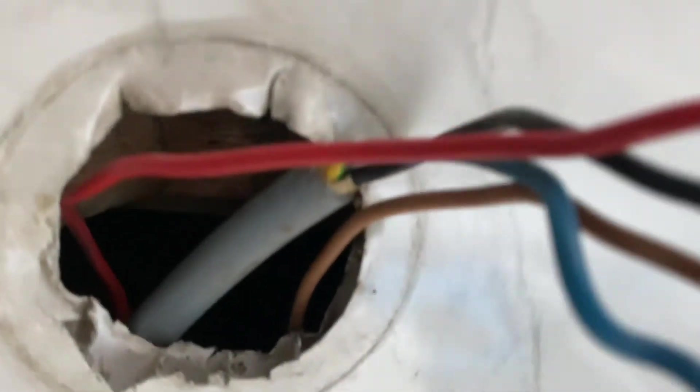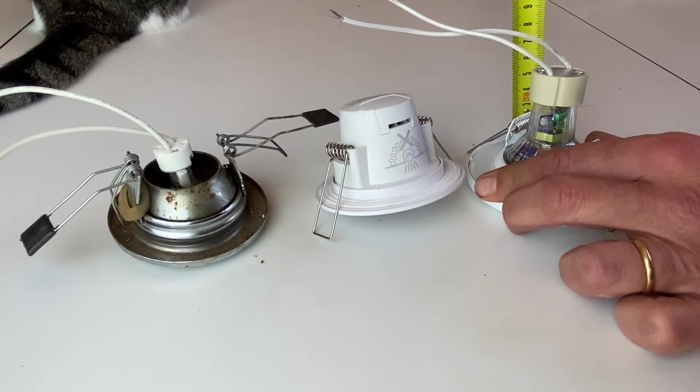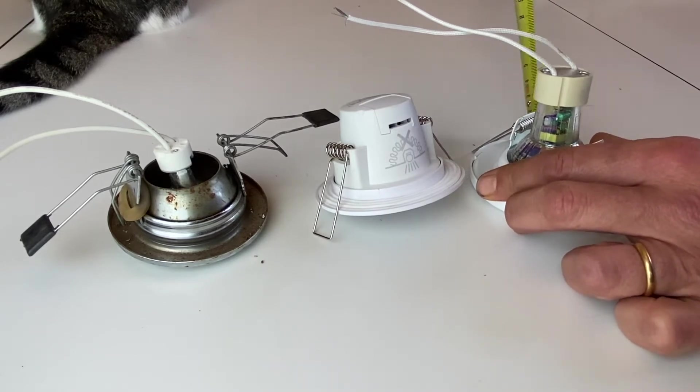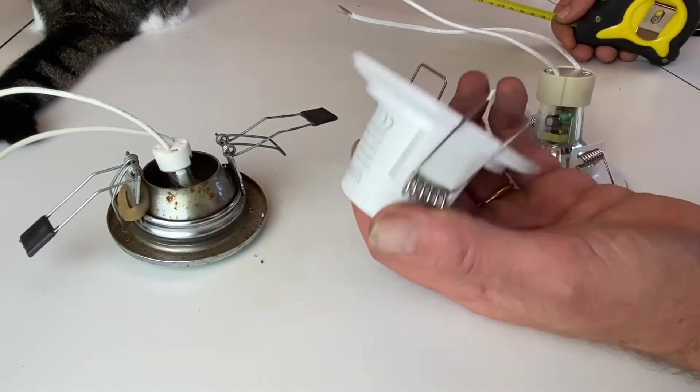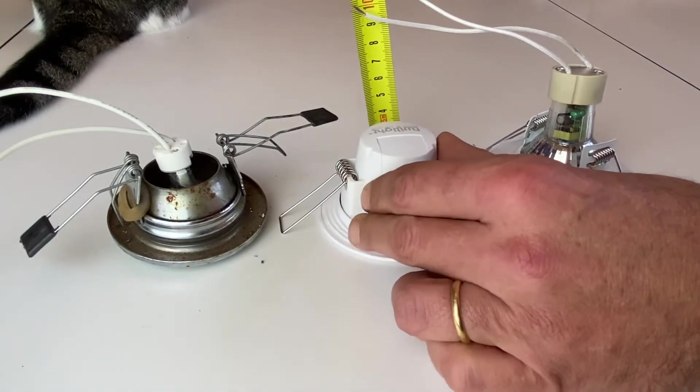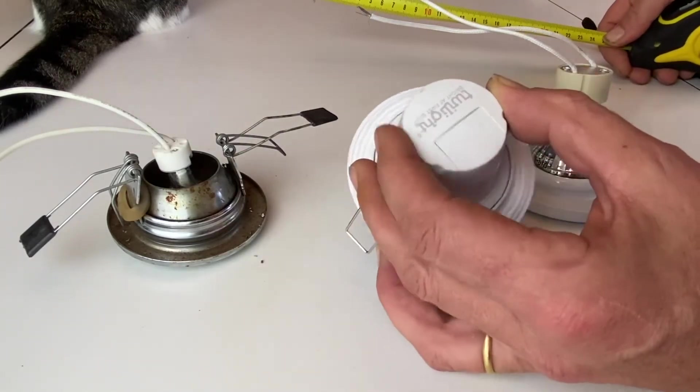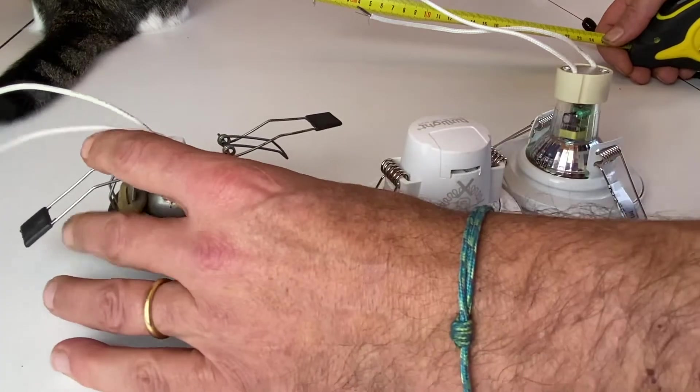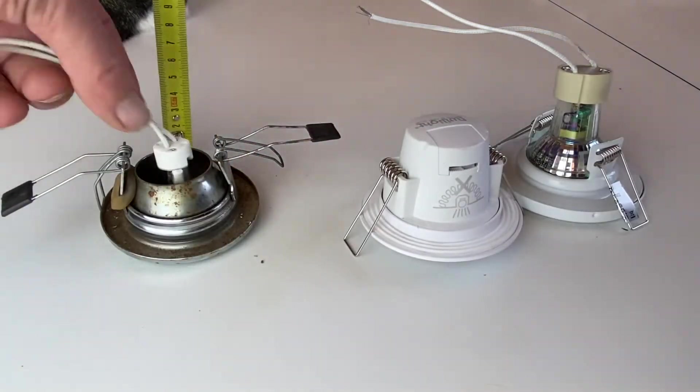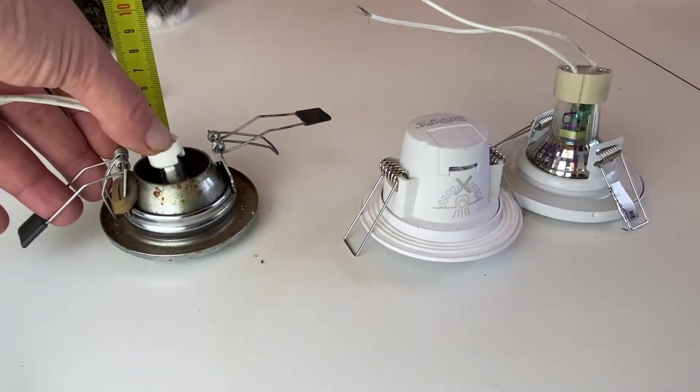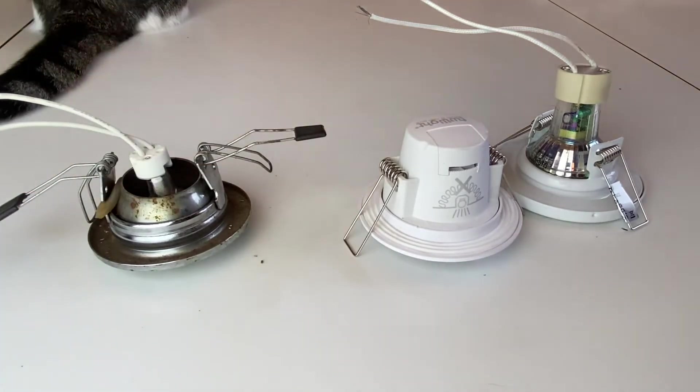Sometimes you have some space constraints on the top. For instance, this one here is six and a half centimeters. This one here, special flat one, so here it's around let's say two and a half, but there's a big space needed here on the top, whereas the old ones, low tension, they're around let's say five, but the space required on the top is smaller.